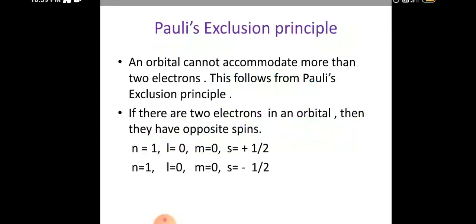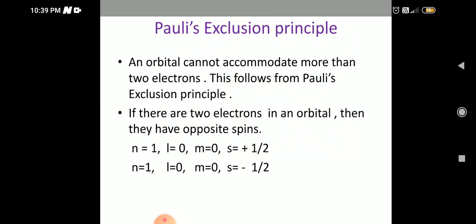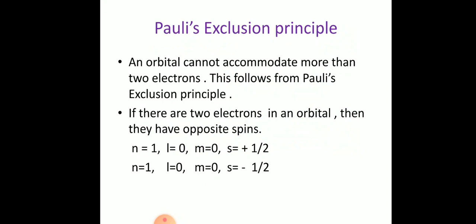According to Pauli's Exclusion Principle, an orbital cannot accommodate more than two electrons — that means a single orbital cannot have more than two electrons. For example, the s orbital can have only two electrons. The p orbitals have three sub-cells: px, py, and pz, and each sub-cell can have two electrons.